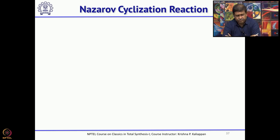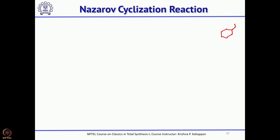There is another reaction called Nazarov cyclization. This cyclization occurs when you have a divinyl ketone (dienone). On treatment with a Lewis acid, you get the corresponding 5-membered ring — a cyclopentenone — and the more substituted double bond is produced.